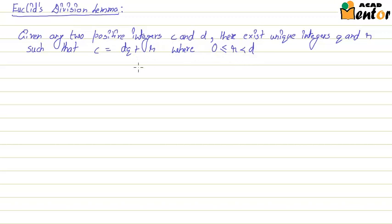So C is basically divisor multiplied by quotient plus a remainder R. What does it mean?